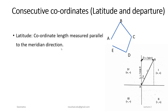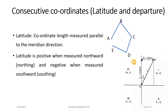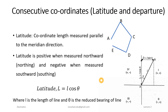Latitude is measured parallel to the meridian. In this figure, the line AB — the component parallel to the north-south direction — is the latitude. It is always positive towards the north and negative towards the south. It is obtained by the equation: Latitude L = l cos θ, where small l is the length of the line and θ is the bearing angle.